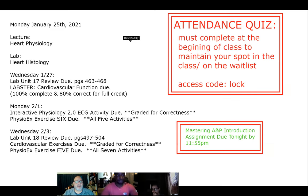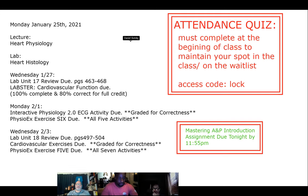On Wednesday, you have your lab Unit 18 review due — your cardiovascular exercises where you're tracing the drop of blood through the heart and through the blood vessels. That is also graded for correctness. PhysioX exercise five is due, which has seven activities — that's seven lab reports. You don't have to print them all; save them as PDFs and post them to the Canvas site. Also remember your Mastering A&P introduction, that four-point assignment, is due by 11:55 tonight.